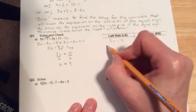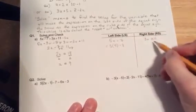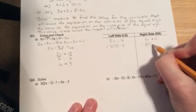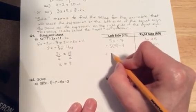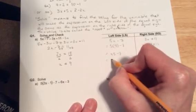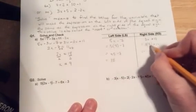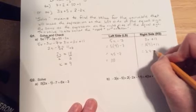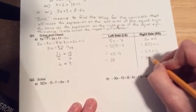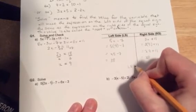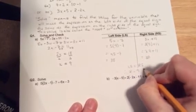We're going to check to make sure the value that we get here will equal the value we get over here when we sub 9 in for the x. 9 times 5 is 45, take away 7 takes us down to 38. On this side we've got 9 times 3 is 27, and we're going to add 11 to that, that's going to equal 38. So because the left side equals the right side, therefore x = 9 is the correct solution.